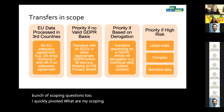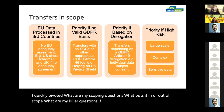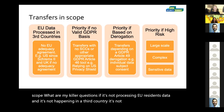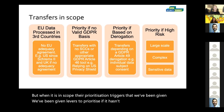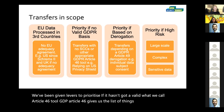So I quickly pivoted to: what are my scoping questions? What puts it in or out of scope? What are my killer questions? Well, if it's not processing EU residents' data and it's not happening in a third country, it's not in scope. But when it is in scope, there are prioritization triggers — levers — we've been given. If it hasn't got a valid Article 46 tool, GDPR Article 46 gives us the list of things we can use as a basis for an international cross-border transfer to a third country. One of those is standard contractual clauses.